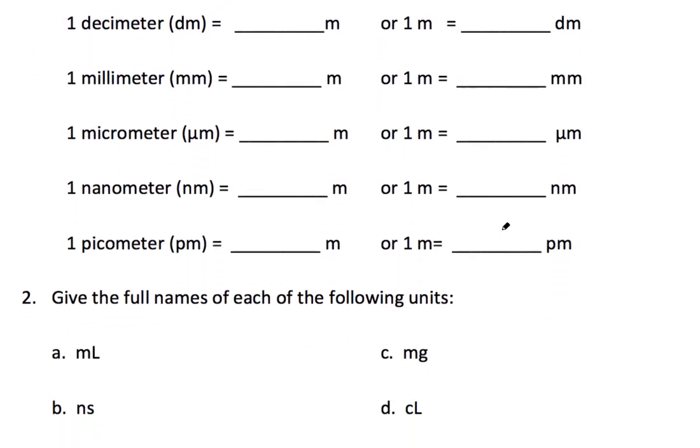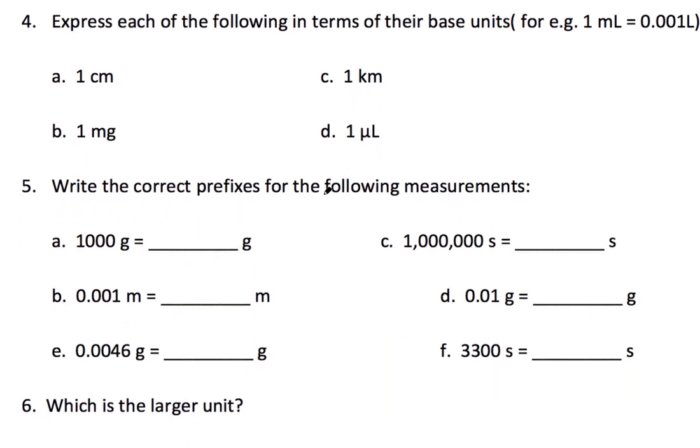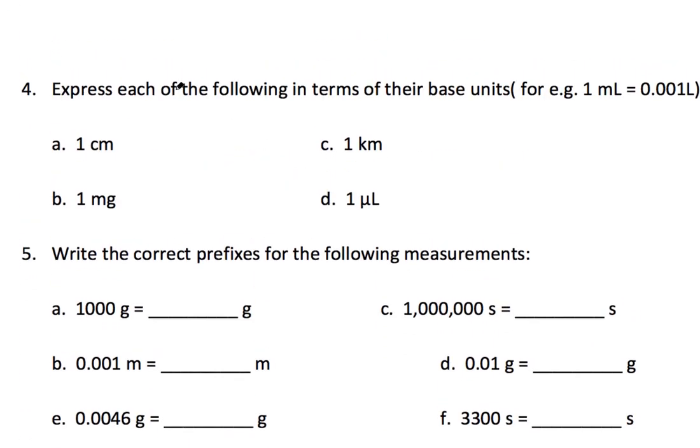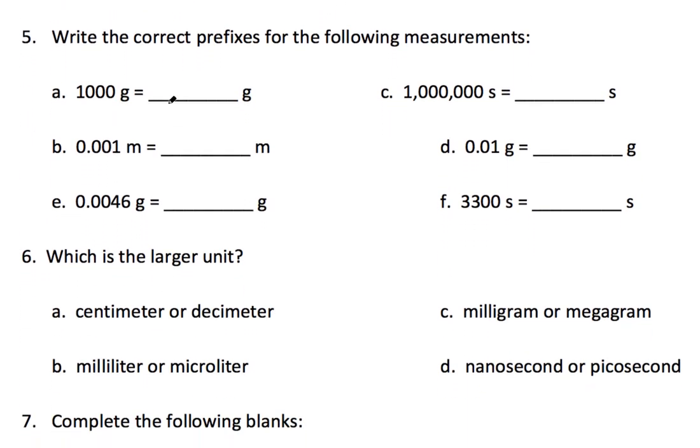So try that, try the big small method and see if that works for you. I want to point out a couple of other things here. Number 4, what they mean here is the base unit for a centimeter is a meter. So they want to know how many base units are there in one centimeter. So you can use substitution here, 10 to the minus 2. You could also use the big small method if you want. We'll practice that some more. Here they just want to know what is that. That's a kilo. Kilo means a thousand.